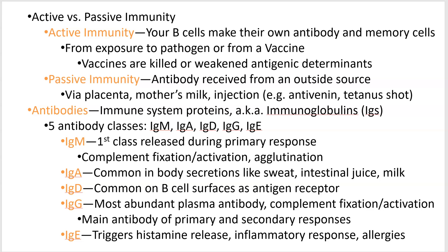Active immunity is when your cells make their own antibodies — they have to be active, they do stuff. You get exposed to the virus, bacterium, fungus, or whatever toxin and you build your own defense. Or you can get this from a vaccine. Vaccines give you killed or weakened antigenic determinants — they disassemble the virus and give you parts of it inside the vaccine.